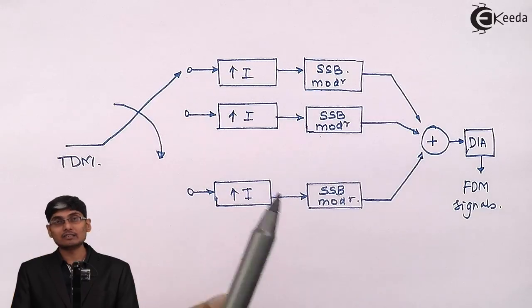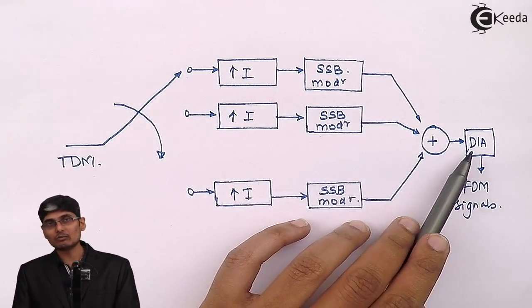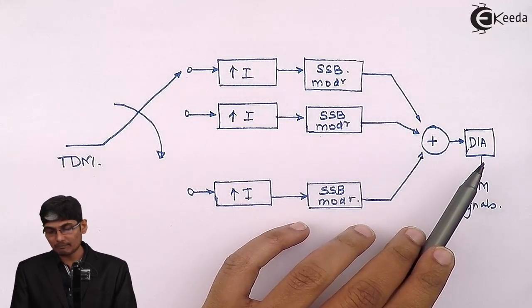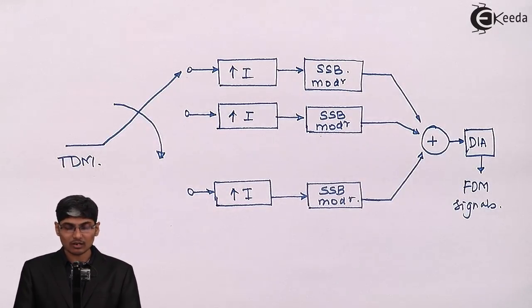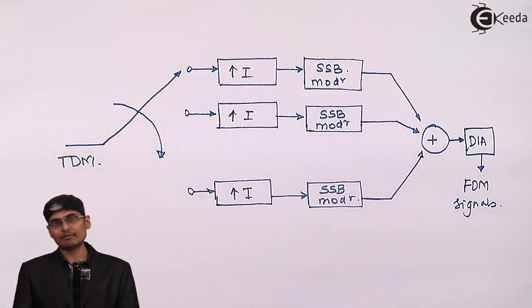Then those modulated signals are combined together, pass through a D to A converter because we are now transmitting over an analog signal and pass through an FDM channel. This is how we translate a TDM signal to an FDM signal.